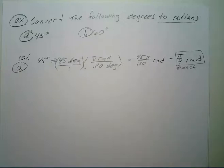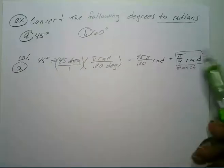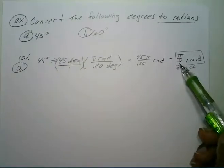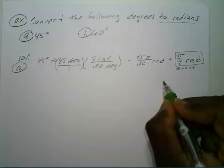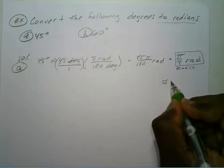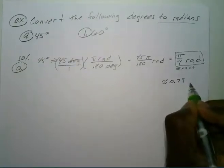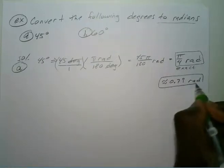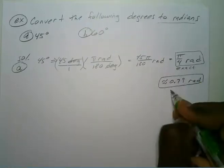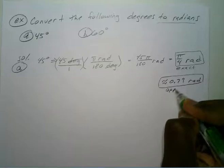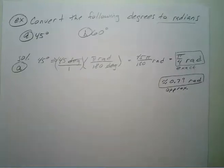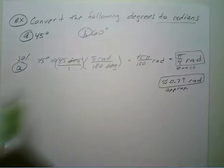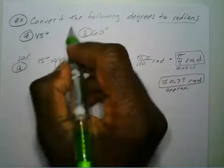So pi over 4 radians is your exact conversion. If you plug pi divided by 4 into your calculator, you get approximately 0.79 radians — that's your decimal approximation. Now let's work on 60 degrees.